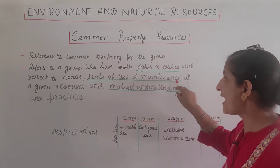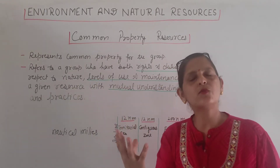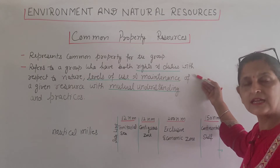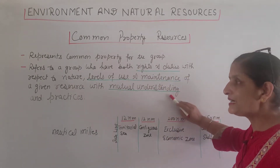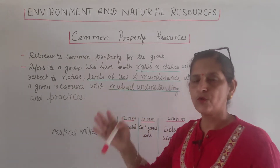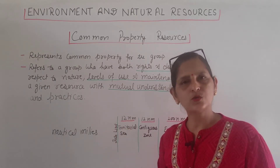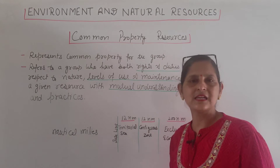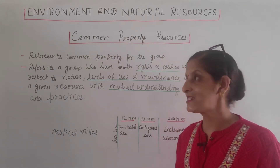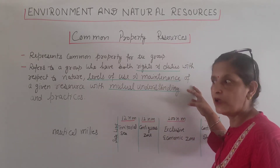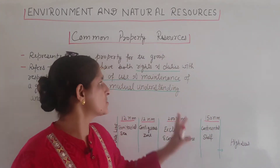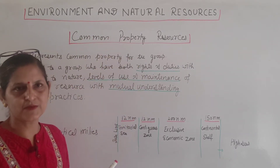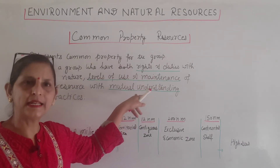Level of use and maintenance of a given resource — yani kis level tak woh use kar sakte hain, aur kaise us resource ko maintain karna hai jo nature ne hume diya hai, usko kaise bachake rakhna hai — with mutual understanding and practice. Kyunki sea common hai, toh usme sabhi countries, poora world use kar raha hai, toh aapas mein mutual understanding ke base par, ek doosre ke saath milkar use bachaye rakhna hai. Woh har country ki responsibility hai ki use maintain karke rakhe.